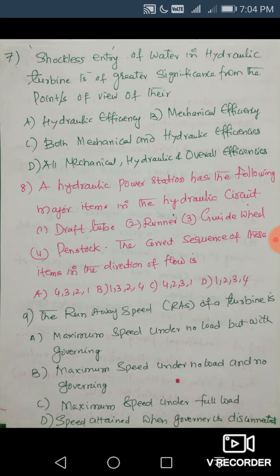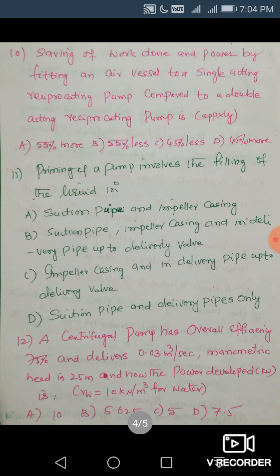Question 9: The runaway speed of a turbine is the maximum speed under no load and no governing. When there is no load, the speed of the turbine is maximum. With no load there is no governing — governing means control of speed according to the load on the turbine. So at no load and no governing, maximum speed is achieved. Answer is B.